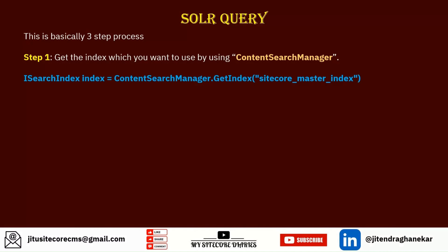The first step is to get the index you want to use by using ContentSearchManager. ContentSearchManager is your class — you call ContentSearchManager.GetIndex() and pass the name of the index. That will provide you the index you're looking for. ISearchIndex is the type you will get back.